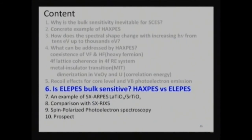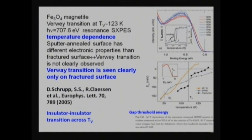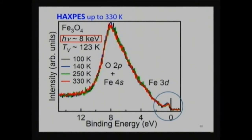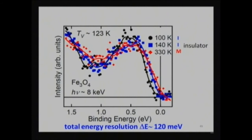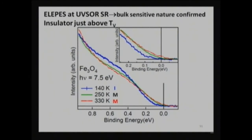Extremely low energy photoelectron spectroscopy is possible in the laboratory without a synchrotron facility. This is HAXPES of magnetite; the transition metal 3d is very weak but we can improve statistics. The Verwey transition is at 123 K, and even above this transition the system is insulating — so it is an insulator-to-insulator transition. By measuring with LPS at 7.5 eV, the sample at 140 K is insulating, and the density of states at the Fermi level gradually increases as a function of temperature. This insulator-to-insulator transition is established in magnetite.